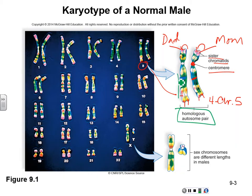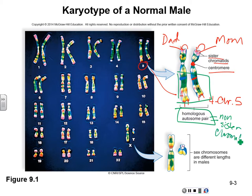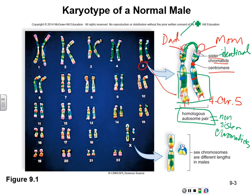The homologous pair is all four. Sometimes you'll see the word homologous chromosomes paired with the term non-sister chromatids. What are they saying? These two are sisters, and these two are sisters, meaning identical, almost. These are not the same — the chromosome you get from dad is not the same as the chromosome you get from mom.